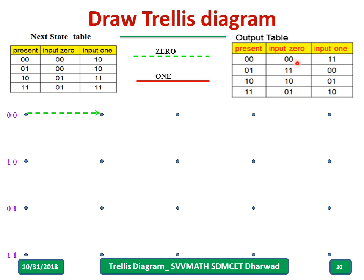This pattern repeats at each time step: from state 00, input 0 always leads to state 00 with output 00. Now, at any time instant if the input is 1 from state 00, the next state is 10 — draw a solid line from 00 to 10 and label the output 11. Once a line is drawn, parallel lines are added for subsequent time steps with the same output label.